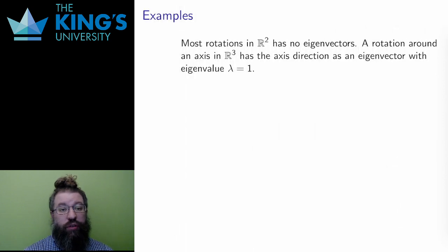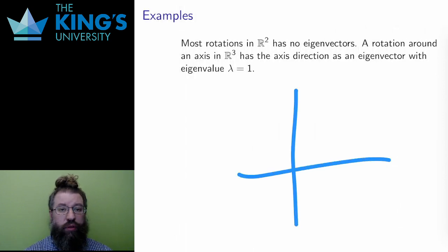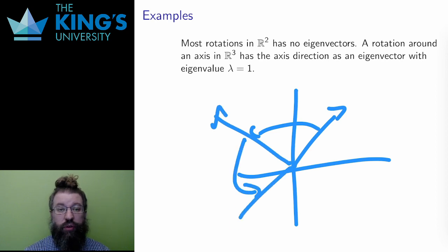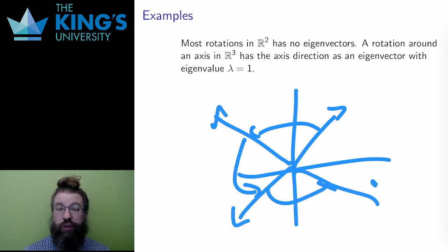A rotation in R^2 has no eigenvectors. No directions are preserved by rotation. They are all changed by the angle of the rotation. The only exception is the rotation by exactly half a circle, half a turn.